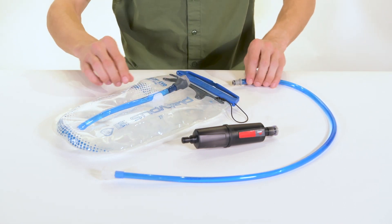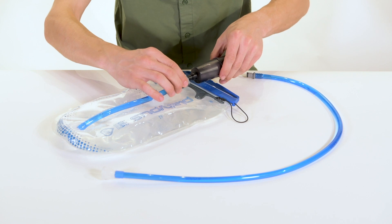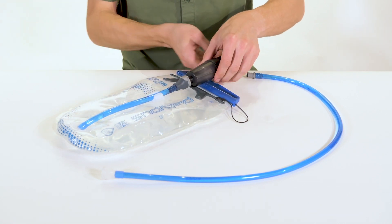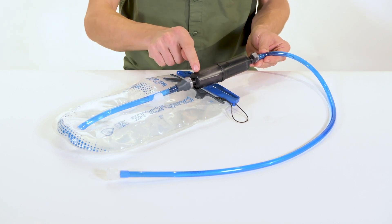Detach the drink tube from the reservoir. Fill the reservoir with water. Plug the filter into the reservoir. Plug the drink tube into the filter. Ensure the arrow on the filter points toward the bite valve.